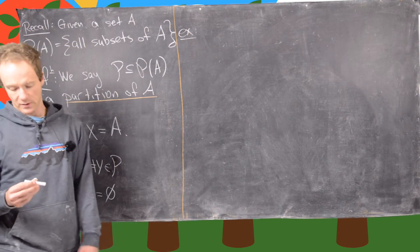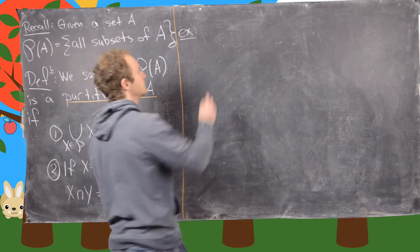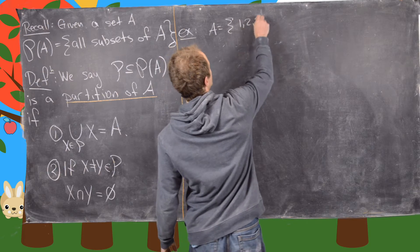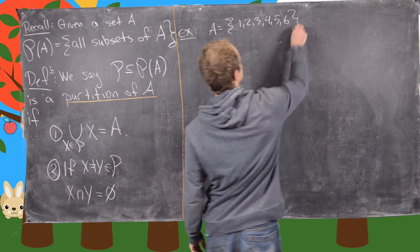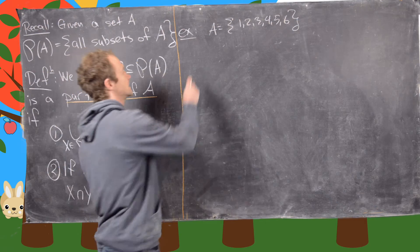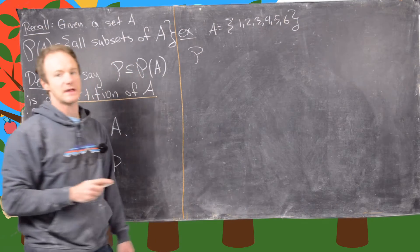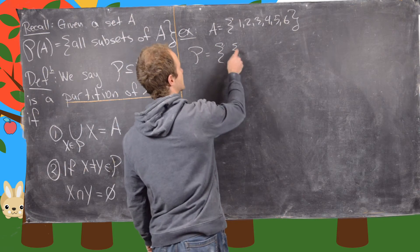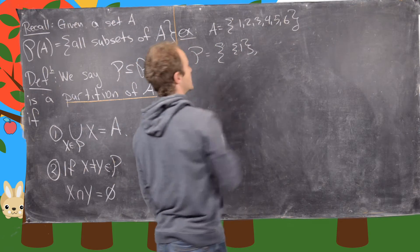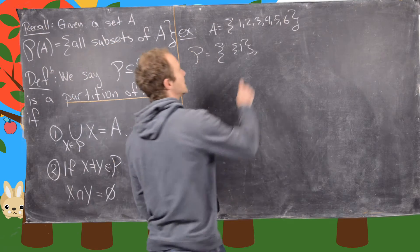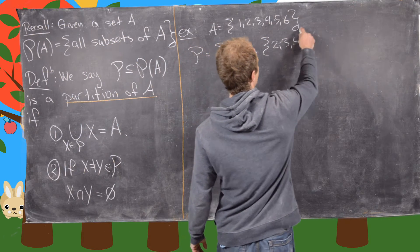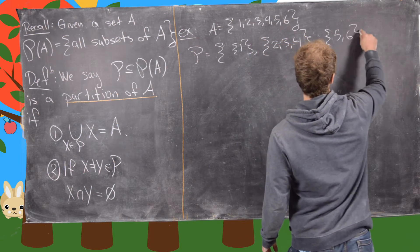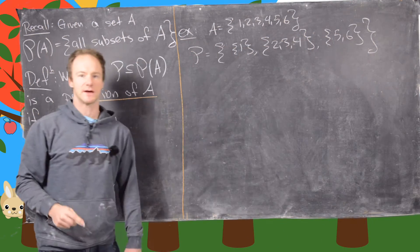Let's look at some examples. The first example: let's take A to be the set {1, 2, 3, 4, 5, 6}. And then let's take P to be a set of subsets. So the first one is the singleton {1}, the second one is {2, 3, 4}, and the third one is {5, 6}. So we've got those three subsets.